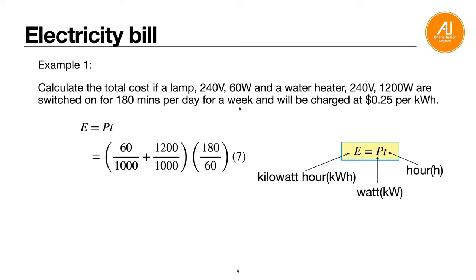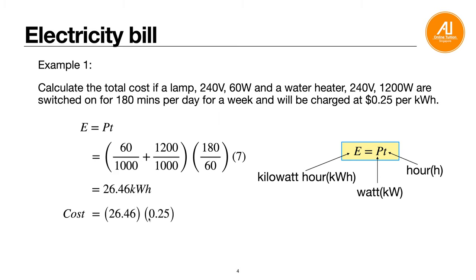The question might ask for a week, a day, or a month - multiply accordingly. Be careful not to just use 180 without converting to hours, and always convert watts to kilowatts. The calculation gives 26.46 kilowatt hours. Then for the cost: 26.46 units times $0.25 gives a total of $6.62, rounded to two decimal places.